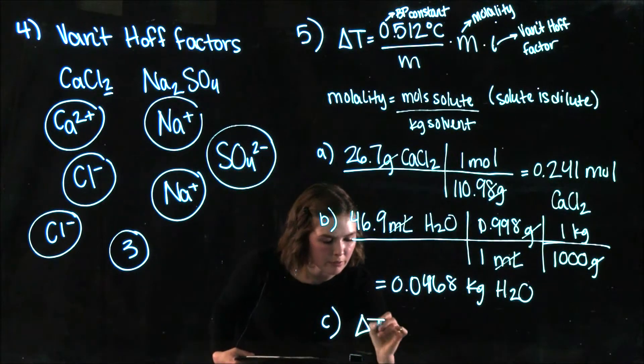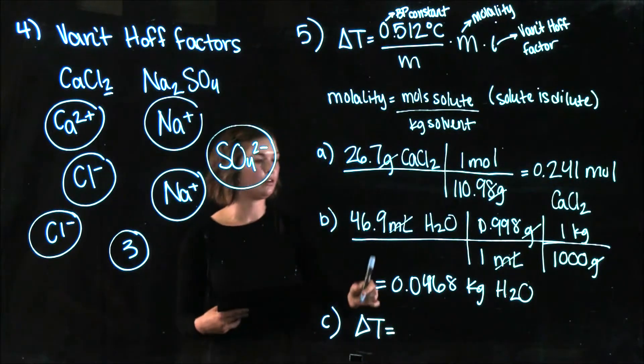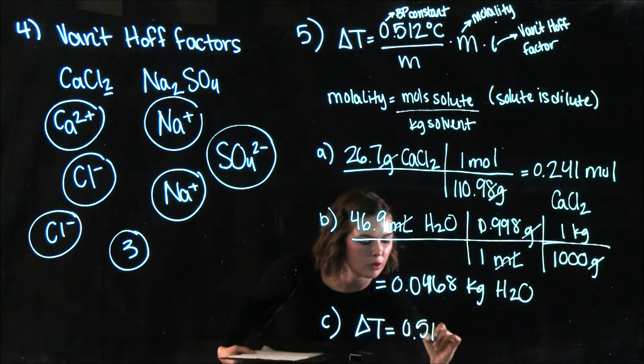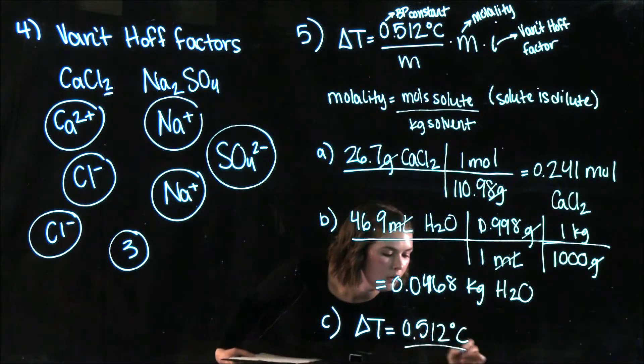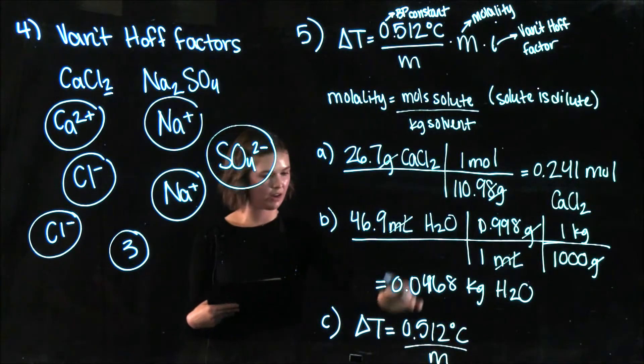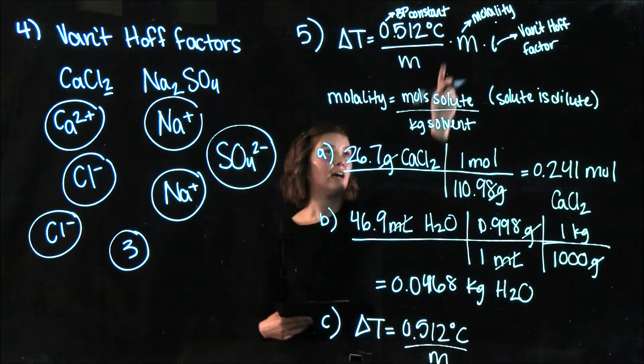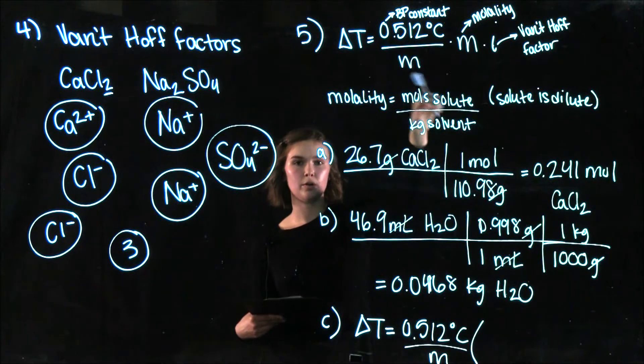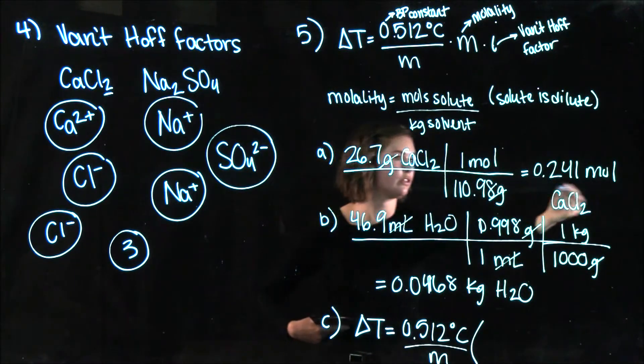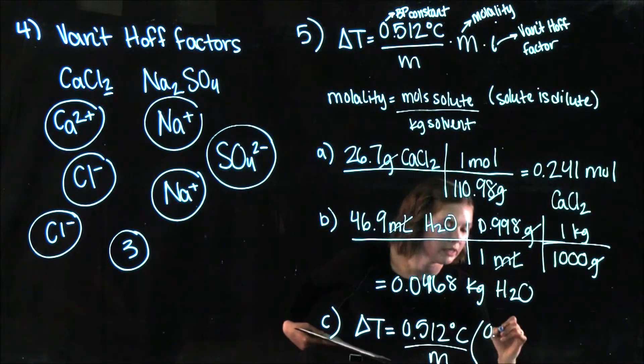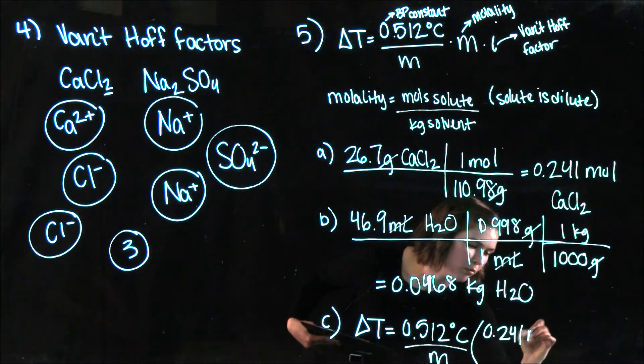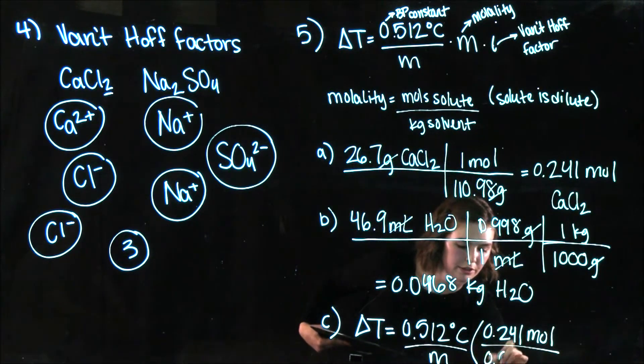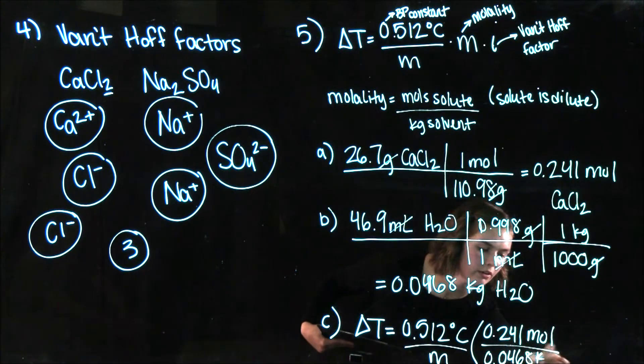So, our theoretical boiling point elevation for our salt solution is 0.512 degrees C over M. And remember this is a constant so you're just given it. And then it's going to be times the molality which we found is moles of solute per kilogram of solvent. So our moles of solute was 0.241 moles per 0.0468 kilograms.